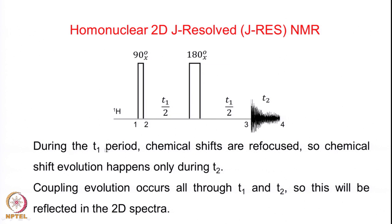During the T1 period, chemical shifts are refocused — we have seen this before when we discussed the spin echo. Chemical shift evolution happens only during T2. On the other hand, coupling evolution occurs all through T1 and T2. So this will be reflected in the 2D spectrum.